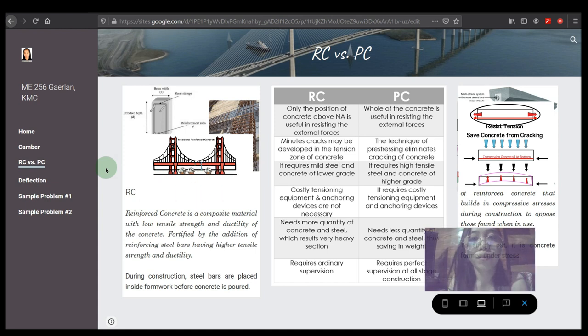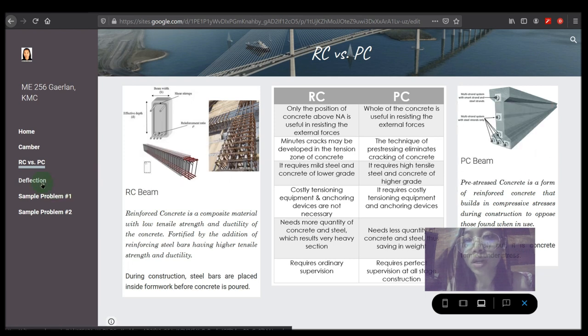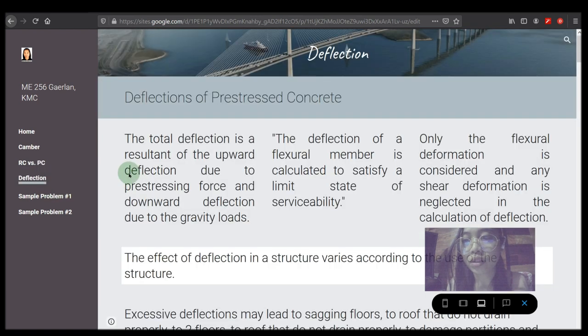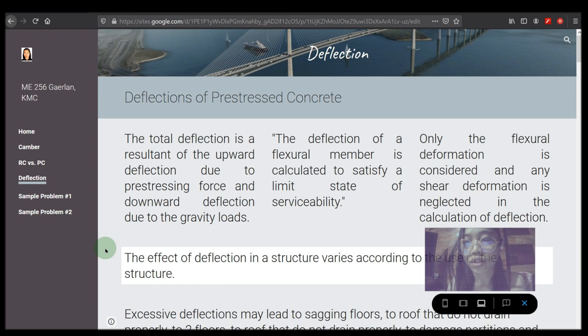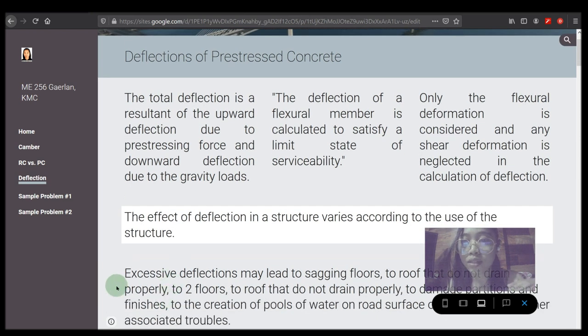Now here in deflection, prestressed concrete has important advantages over reinforced concrete. First, the entire section is effective in resisting the applied moment, whereas only the section above the neutral axis is fully effective in reinforced concrete. This leads to greatly reduced deflections under service conditions.